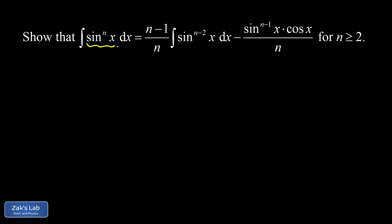So it turns out if you integrate sine to the nth power where n is some integer greater than or equal to 2, then you can express this in terms of an integral of sine to the n minus 2 plus a leftover term here, sine to the n minus 1 x cosine x over n.